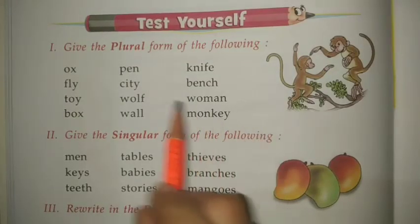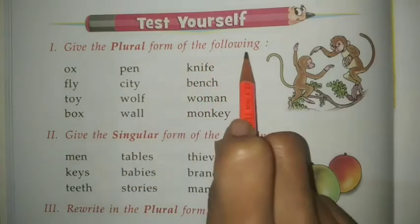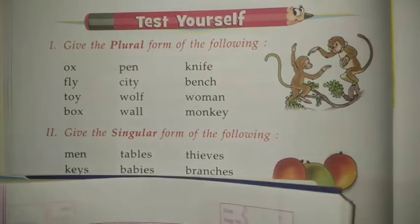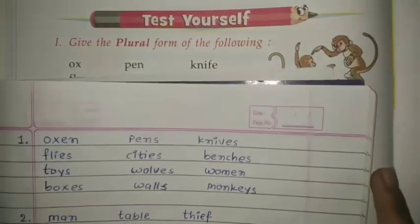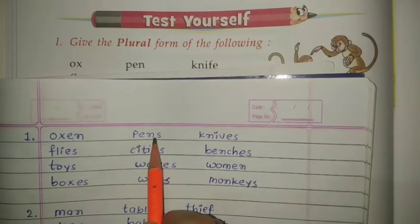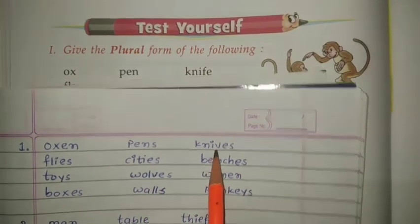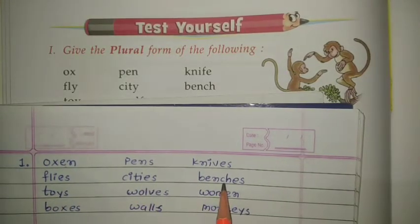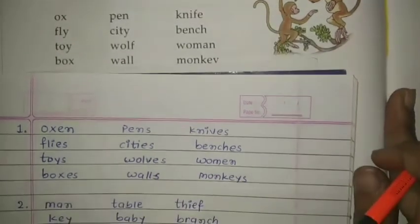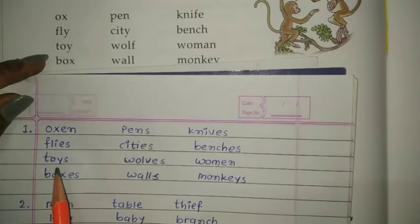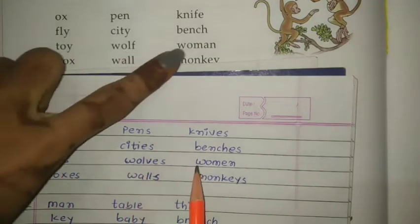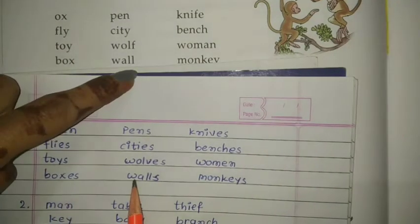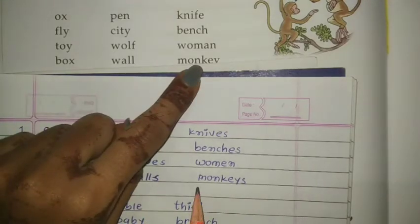Test Yourself — Exercise 1: Give the plural form of the following words. ox → oxen, pen → pens, knife → knives, fly → flies, city → cities, bench → benches, toy → toys, wolf → wolves, woman → women, box → boxes, wall → walls, monkey → monkeys.